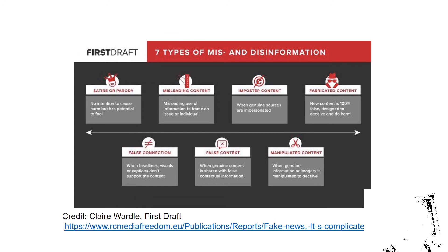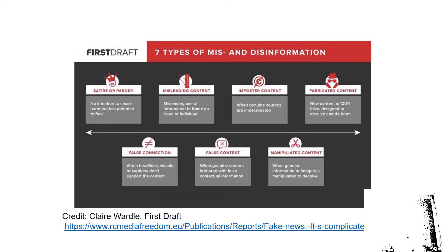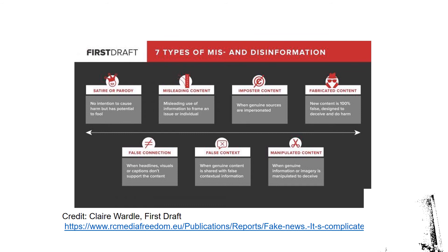Number three: imposter content. This is when genuine sources are impersonated. For example, there are fake news websites that pretend to be BBC. Or when somebody says they heard something from a place that doesn't actually exist. Or if somebody pretends to be someone else and makes a statement attributed to them which is not true.